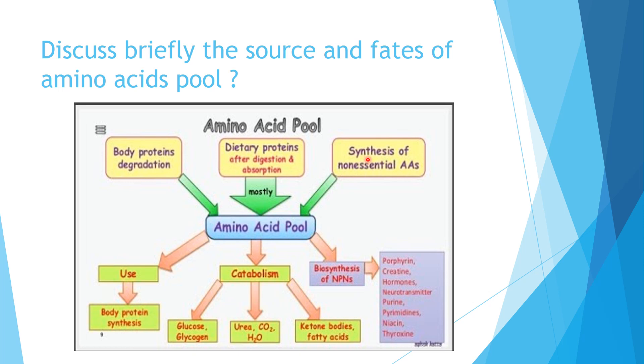The third source is synthesis of non-essential amino acids. Non-essential amino acids are synthesized in the body and sent to the blood. These are the three major sources of amino acid pool.